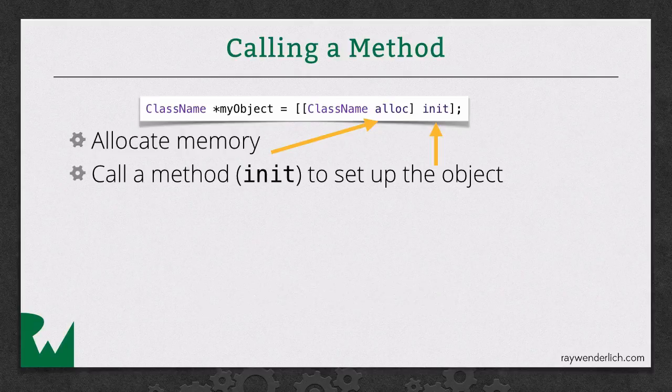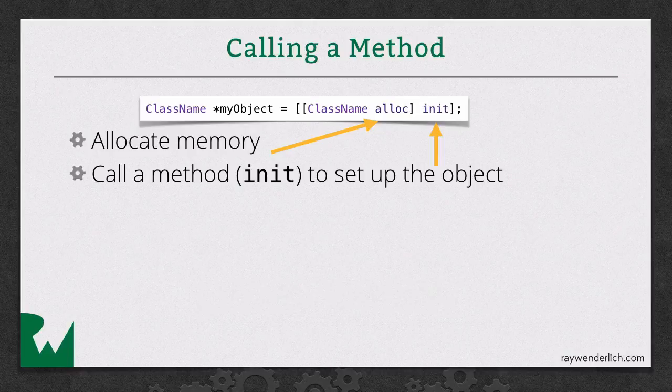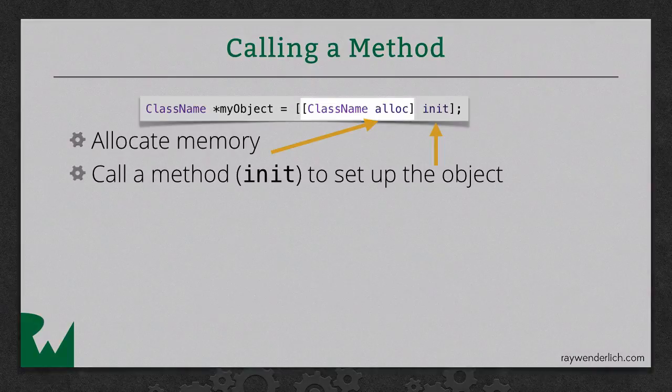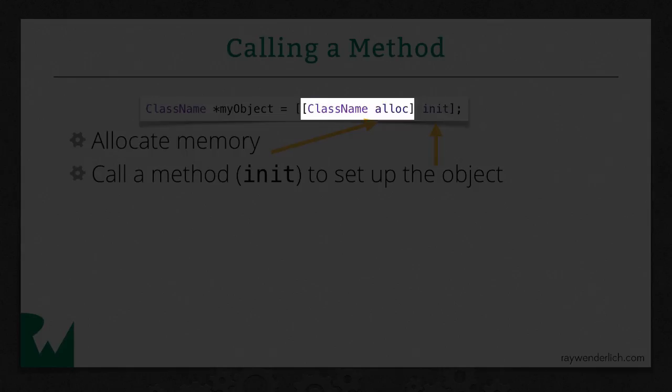And the typical pattern for creating an object in Objective-C is you allocate memory for an object by calling the alloc method, and then you call the init method on that allocated object. Now, notice this is another weird thing about syntax with Objective-C. If you're coming from other languages' background, you're probably used to calling methods with parentheses. In Objective-C, you use brackets instead. So, going in the innermost brackets here, you're calling on the object class name, you're calling the alloc method. The result of that returns an object. On that returning object, you then call the init method.